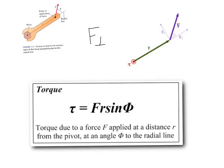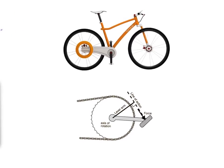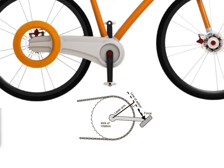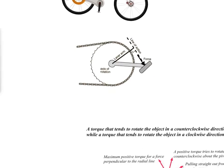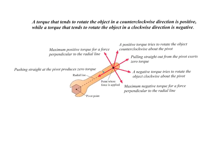The perpendicular distance from the line of force to the pivot point is called the moment arm or lever arm. If the force is completely perpendicular to the lever arm, you use the full force with no sine calculation needed. If you've ever ridden a bicycle, you've experienced torque. It's more difficult to start moving when the pedals are at their highest position because the force you apply is almost straight down toward the pivot point, leaving very little force perpendicular to the lever arm, generating almost no torque.